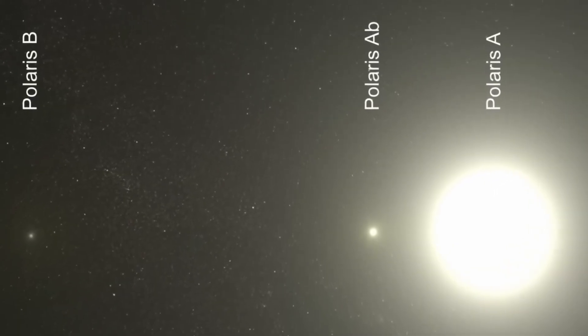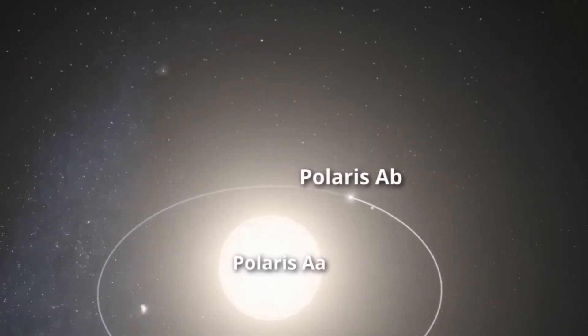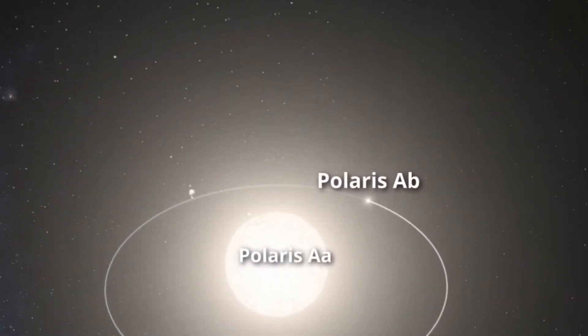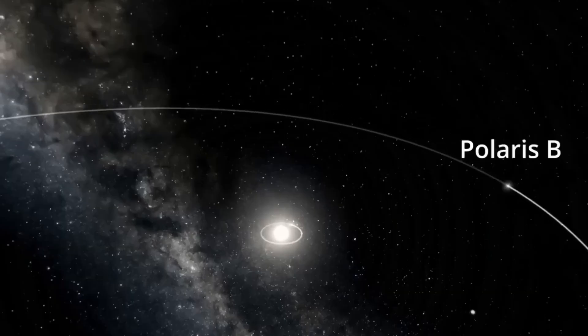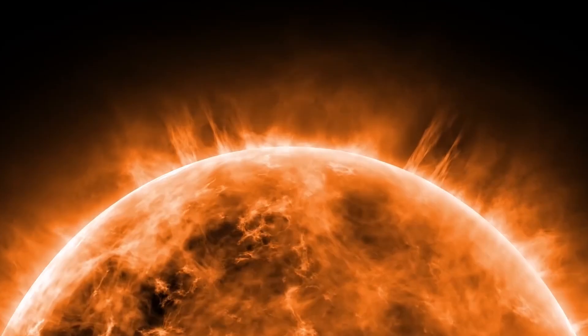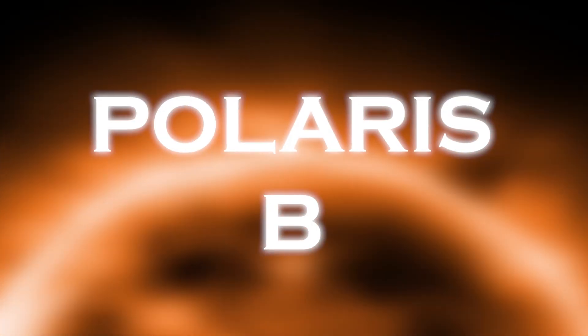Within this system, the primary stars are Polaris AA and Polaris AB, which when seen with the naked eye, look like a single star. In addition, there is a third companion, Polaris B, orbiting this binary pair.